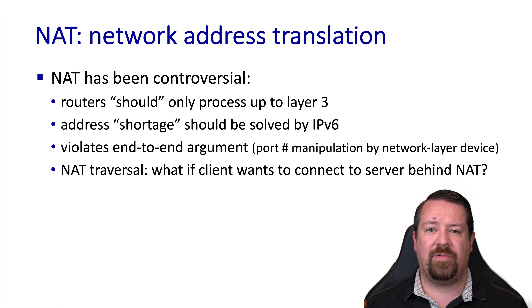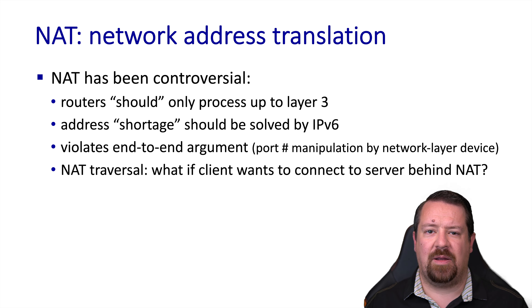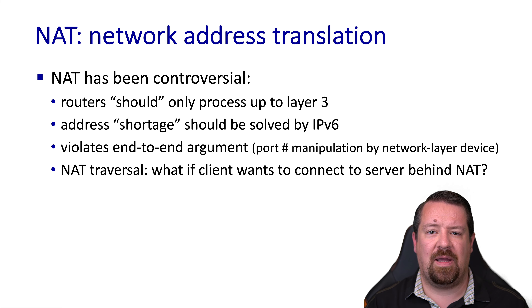There are a number of issues here. One is that routers are Layer 3 devices — they're not supposed to be manipulating Layer 4. Another is that IPv6 has been around for decades and would easily solve the address shortage problem. NAT is one type of middle box in that, instead of only handling Layer 3 as routers should, it changes fields in Layer 4, which may cause problems for applications.